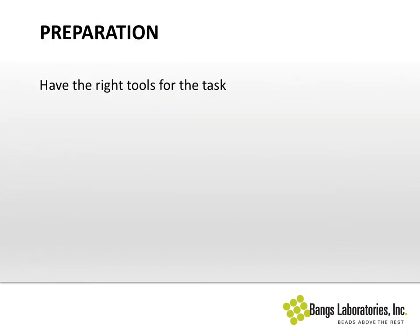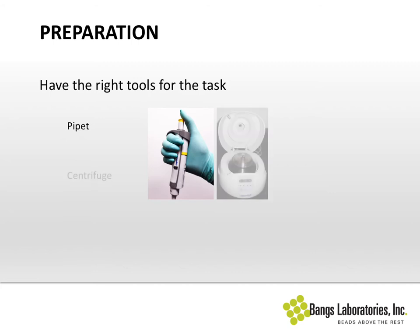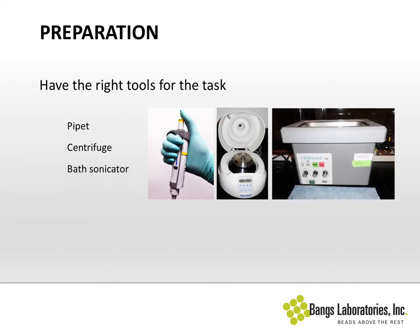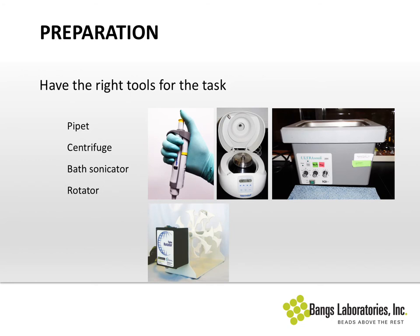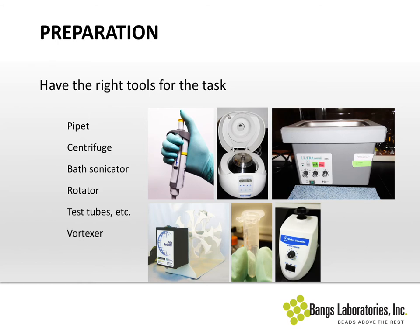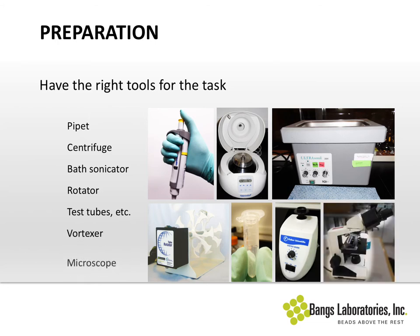Before we get started, it's appropriate to have the right tools for the task. You'll need a calibrated pipette, a centrifuge or micro centrifuge depending on your scale, a bath sonicator — this will aid in resuspension of microspheres and also in addressing aggregation issues. A rotator, which you'll use during incubation periods as well as to help with resuspension. Test tubes in various sizes depending on your scale. A vortexer to aid in aggregation issues and resuspension. And the most important item in your lab is your microscope — you will use it to look at your beads throughout the coating process.